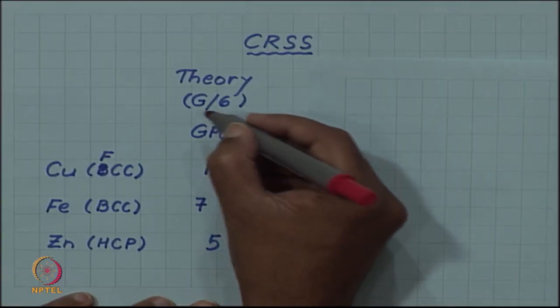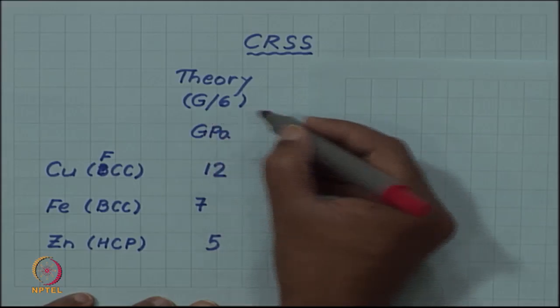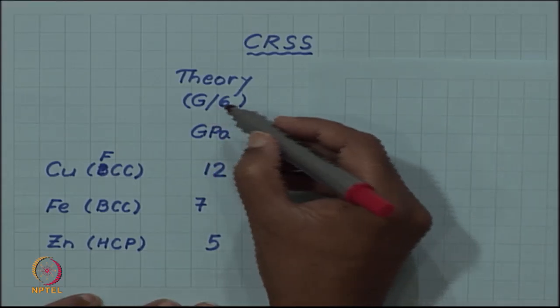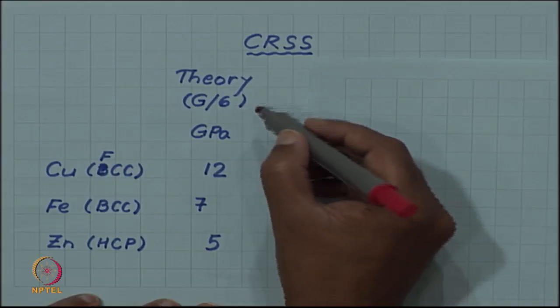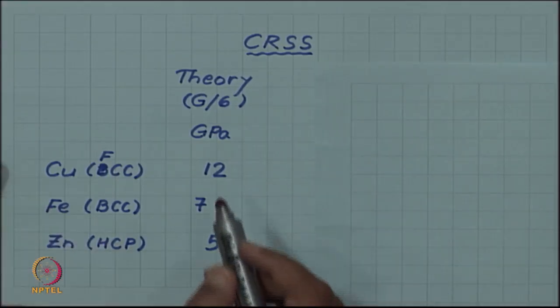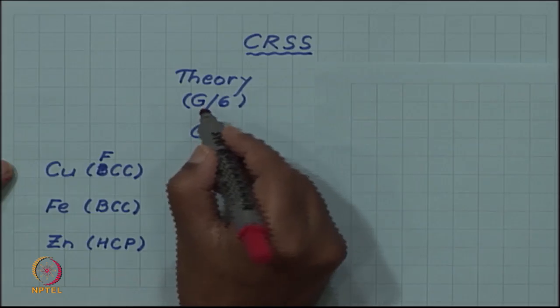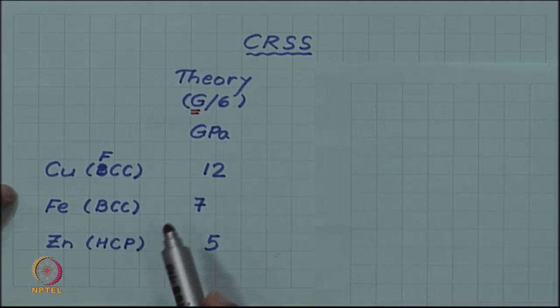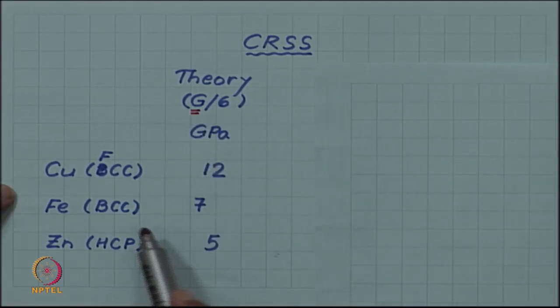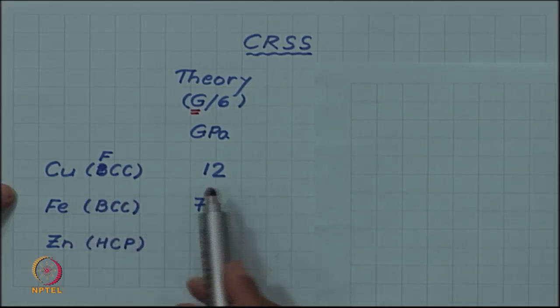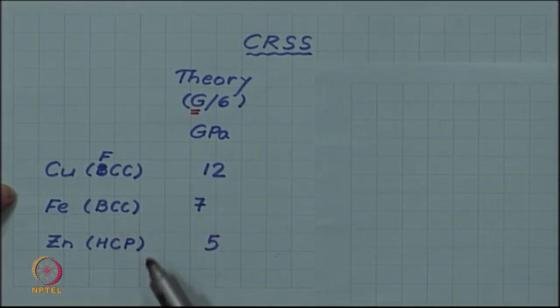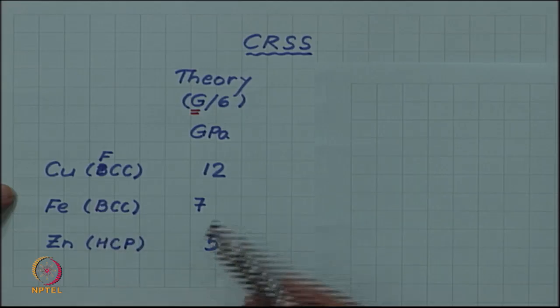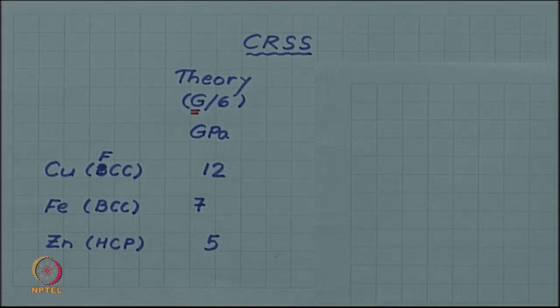If we use the experimental value, non experimental, this is a very simple, the theory predicted a very simple way of calculating critical resolved shear stress. And so all we need to know now is the shear modulus of different material and these have been experimentally determined. So if we divide the shear modulus by 6 we get different values of critical resolved shear stress for different materials, three materials listed here and some typical value of modulus divided by 6 which will be the critical resolved shear stress predicted for them.